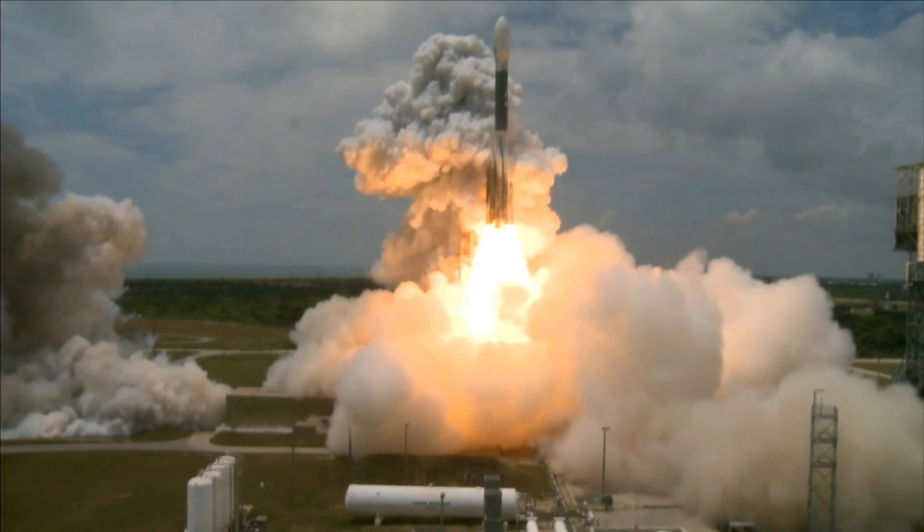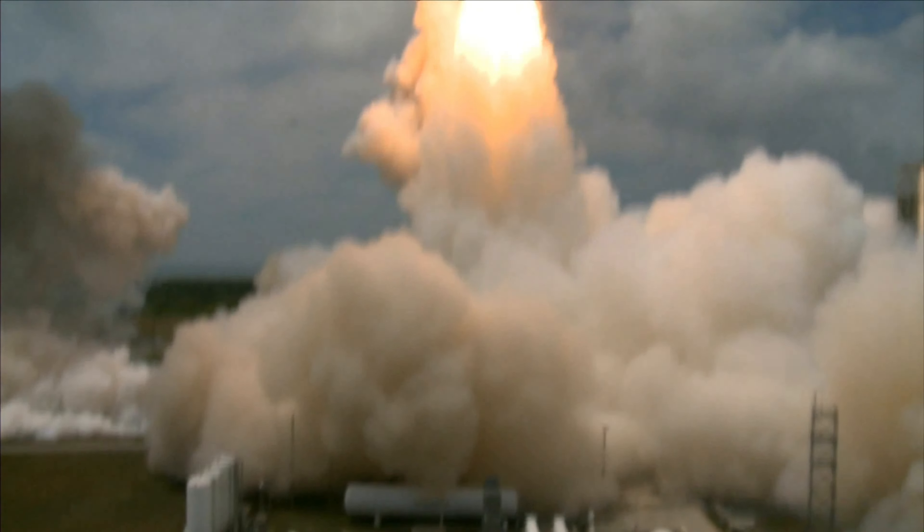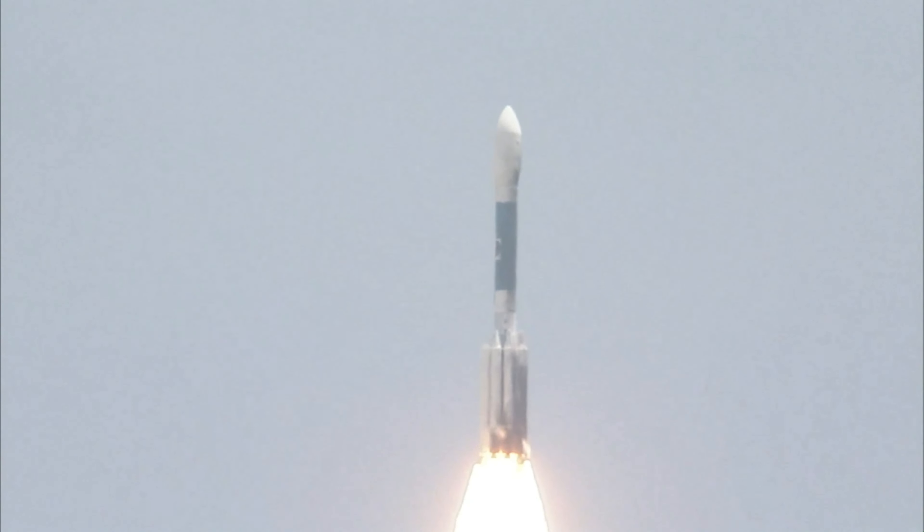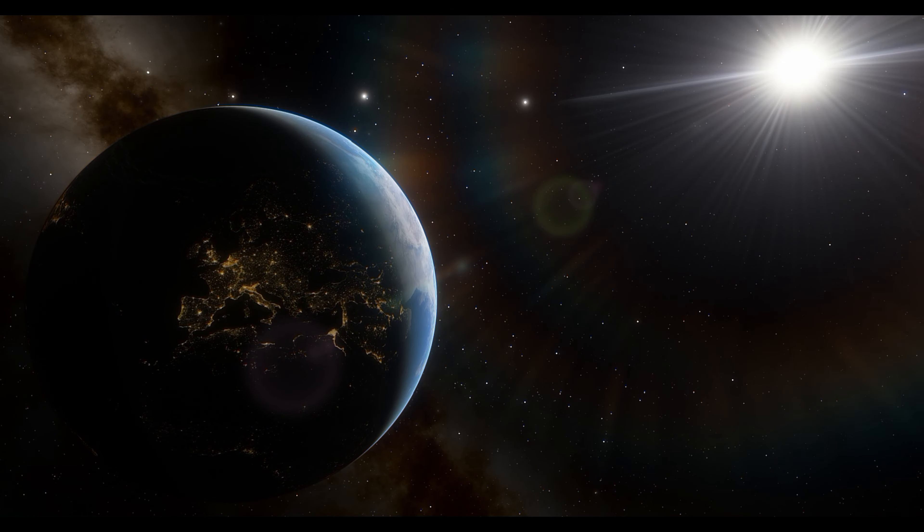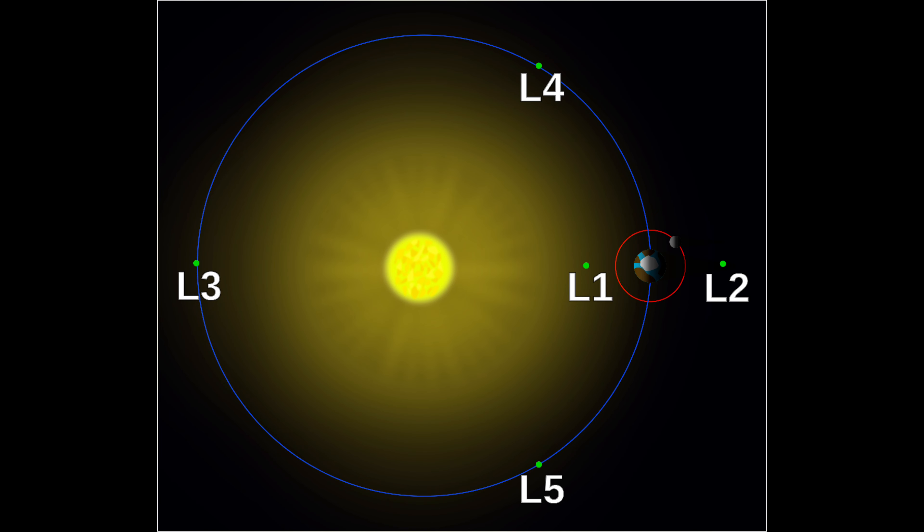ISRO has set the date for the launch of its first-ever solar mission on 2 September 2023. It will be inserted to about 1.5 million kilometers from Earth in a halo orbit around the L1 Lagrange point between the Earth and the sun.